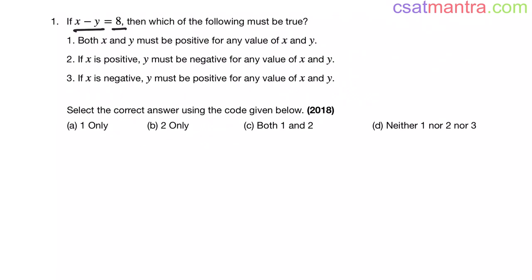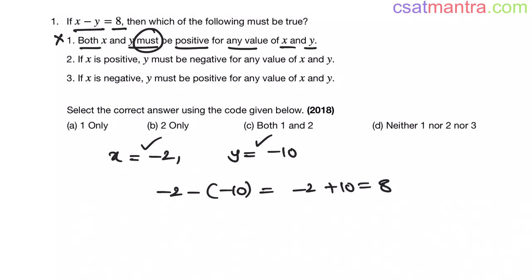Now conclusion one is both x and y must be positive for any value of x and y. This statement is not necessarily true, my friends. If x equals minus 2 and y equals minus 10, then x minus y equals minus 2 minus minus 10, which equals minus 2 plus 10, which equals 8. So x and y need not be positive - they can be negative also. Therefore, conclusion one is invalid.